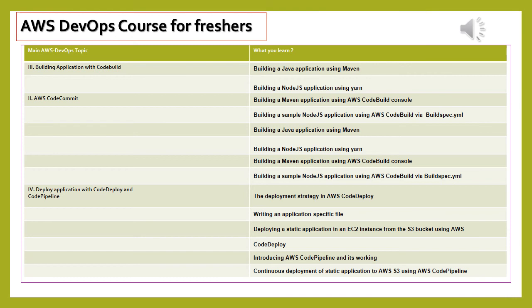Deploy Application with Code Deploy and Code Pipeline: in AWS, Code Deploy is the service to deploy code in the test or production environment. The DevOps tasks can be streamlined as a sequence of activities run offline through an automation process, which is the Code Pipeline service. You will be integrating all the above process tasks into a Code Pipeline activity and testing them. Topics covered include: deployment strategy in AWS Code Deploy, writing an application-specific file, deploying a static application in an EC2 instance from the S3 bucket using AWS Code Deploy, introducing AWS Code Pipeline and its working, and continuous deployment of a static application to AWS S3 using AWS Code Pipeline.